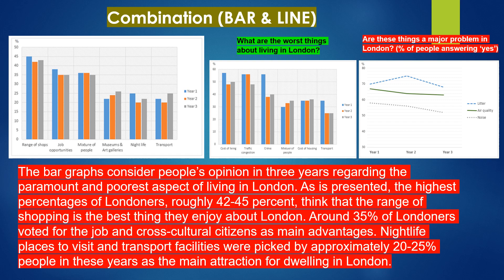The bar graphs consider people's opinion in three years regarding the paramount and poorest aspects of living in London. The highest percentages of Londoners, roughly 42 to 45 percent, think that the range of shopping is the best thing they enjoy about London. Around 35 percent of Londoners voted for the job and cross-cultural citizens as main advantages. Nightlife, places to visit and transport facilities were picked by approximately 20 to 25 percent of people in these years as the main attraction for dwelling in London.